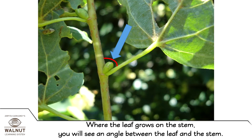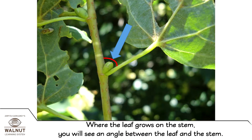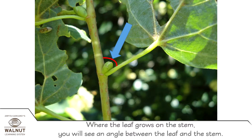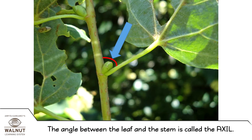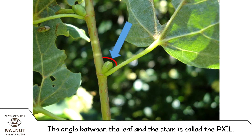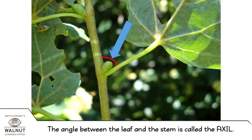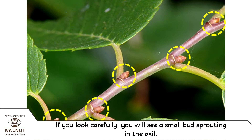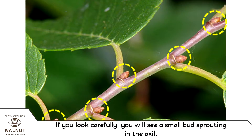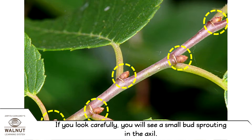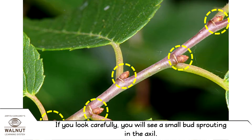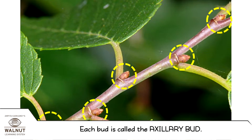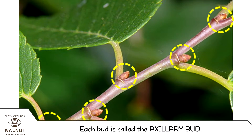Where the leaf grows on the stem, you will see an angle between the leaf and the stem. The angle between the leaf and the stem is called the axil. If you look carefully, you will see a small bud sprouting in the axil.